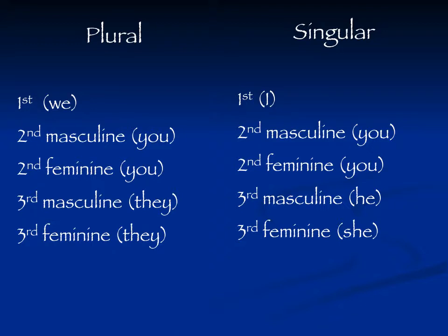English used to have a singular second person, which was the 'thou's and the 'thee's. But those have gone by the wayside. Deep in our hearts, we still desire a plural 'you,' and so depending upon where you are regionally, you might say 'y'all,' 'all y'all,' 'youins,' or 'yous guys.' But in proper English, we only have the one form for those four different groups.